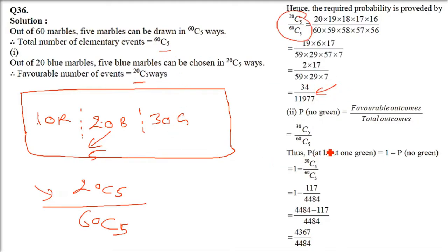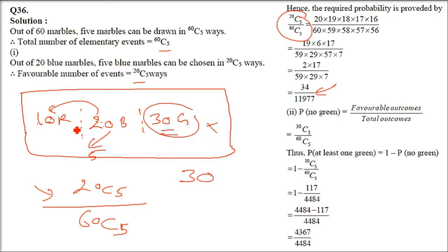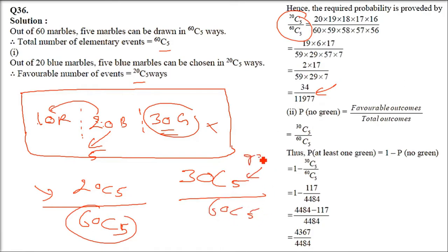For the second part — at least one is green — we first find the probability of no green, then subtract it from 1. If no green is coming, only blue and red should be drawn: 20 plus 10 = 30. You have 30 marbles, taking 5 out of them, so 30C5 divided by 60C5 gives the probability of no green. Subtracting from 1 gives the probability of at least one green, which comes to 4367 by 4484.